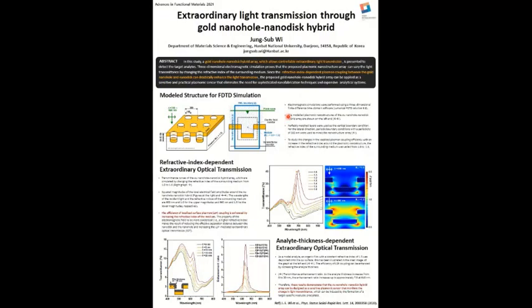The light transmission can be changed by changing the refractive index of surrounding media, as shown in this graph. The refractive index of surrounding media was changed from 1.0 to 1.6, and as shown in this graph, the light transmission around this wavelength range was significantly increased. This result is due to localized surface plasmon coupling between the nanodisc and nanohulls.